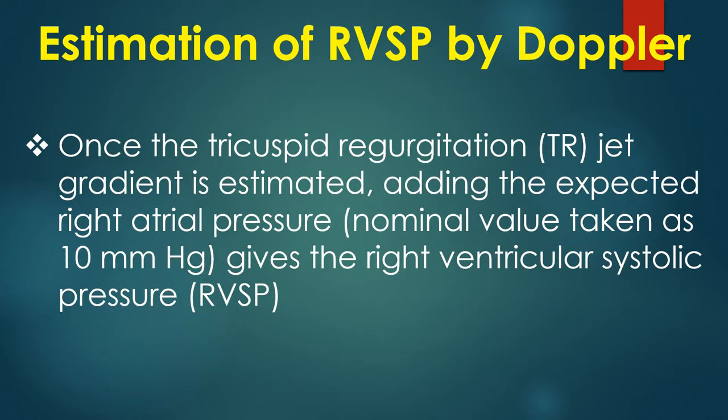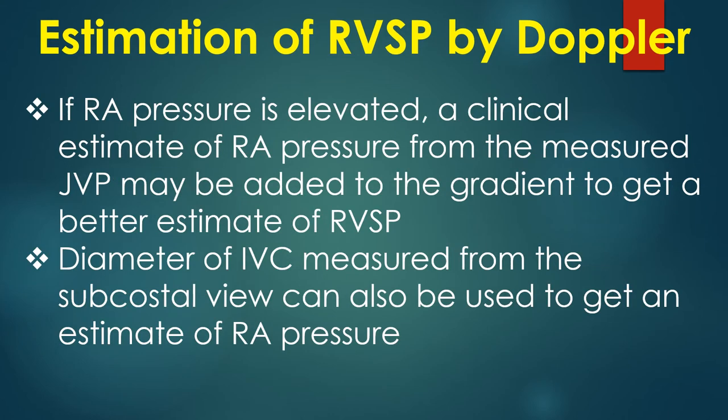Once the tricuspid regurgitation jet gradient is estimated, adding the expected right atrial pressure gives the right ventricular systolic pressure. If the right atrial pressure is elevated, a clinical estimate from the measured jugular venous pressure may be added to the gradient to get a better estimate of RV systolic pressure.